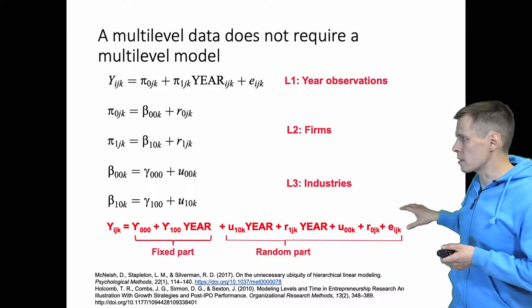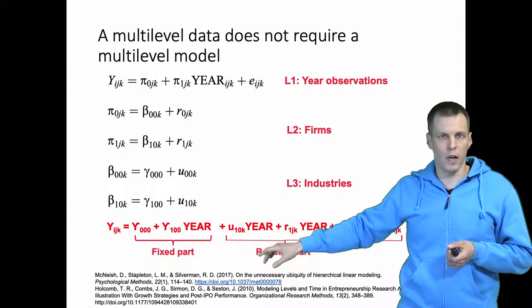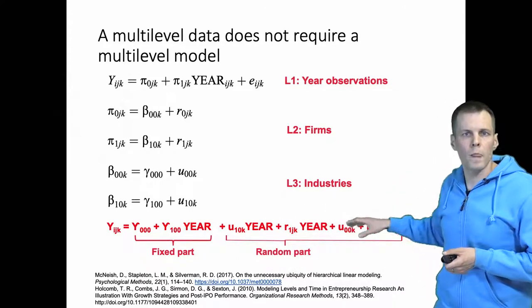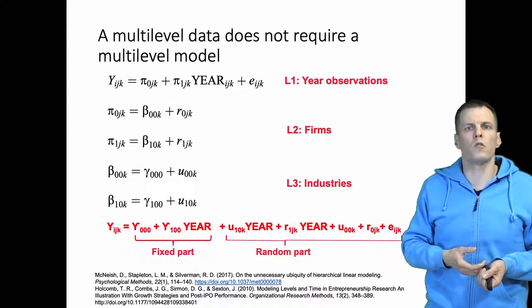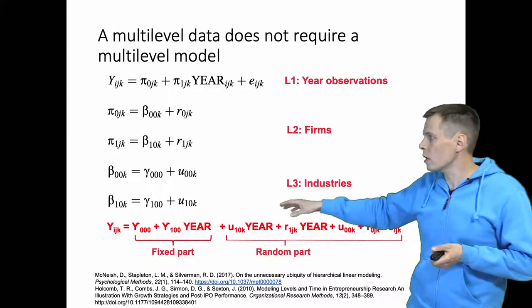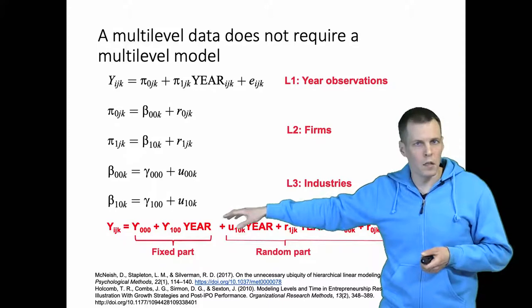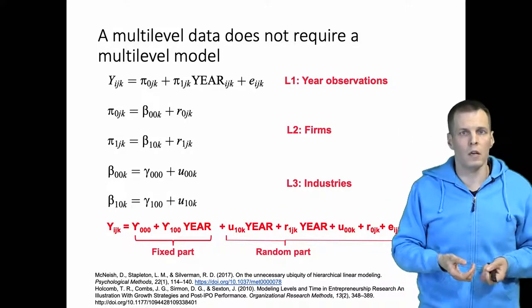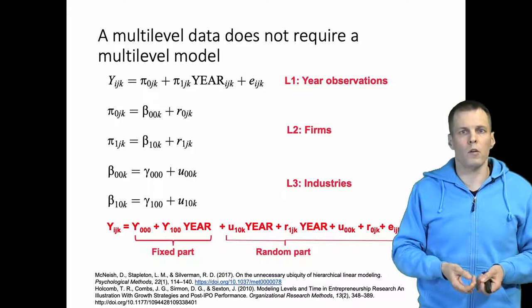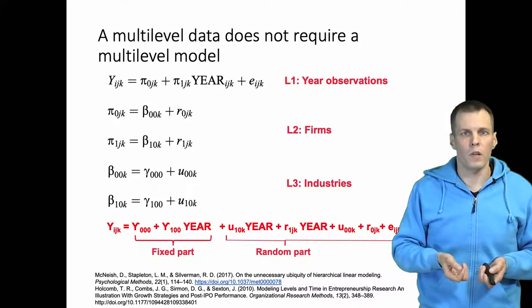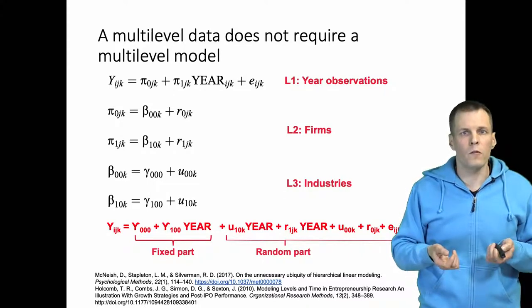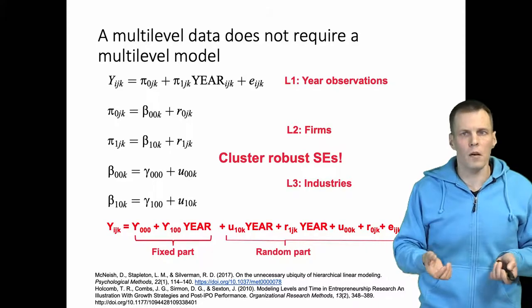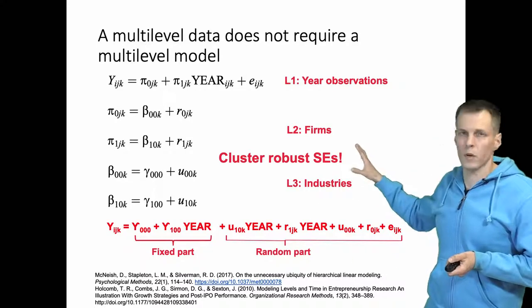This random part is the beef in multilevel modeling and one important thing that you need to understand is that if you're only interested in this fixed part you don't actually need to use multilevel modeling and using multilevel modeling could actually be undesirable.